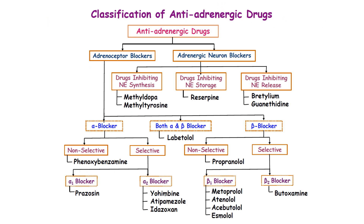This diagram classifies the anti-adrenergic drugs based on their mechanism of action. The first group is the adrenoceptor blockers and the second is the adrenergic neuron blockers. The most commonly used in veterinary medicine as well as in clinical use are the adrenoceptor blockers.